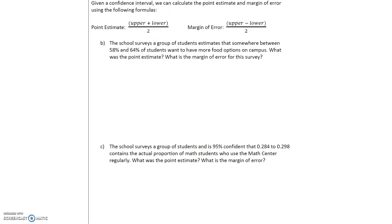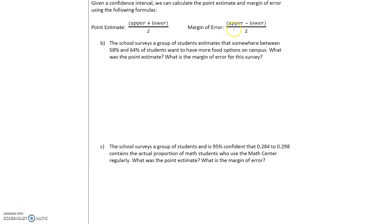Now, given a confidence interval, we can calculate the point estimate and the margin of error using the following formulas. Our point estimate p-hat is the upper value of the confidence interval plus the lower value divided by 2. The margin of error is the upper minus the lower divided by 2.